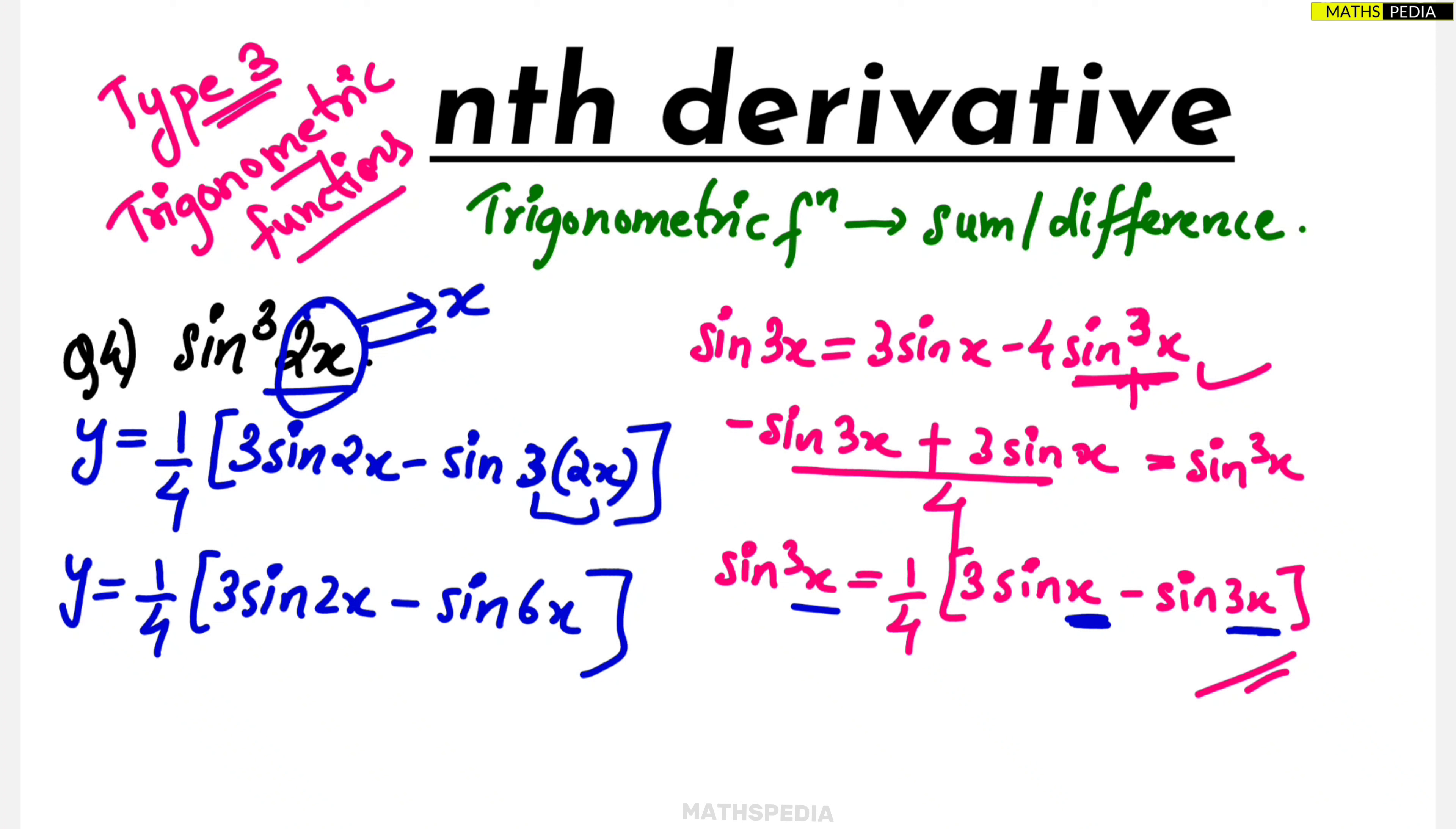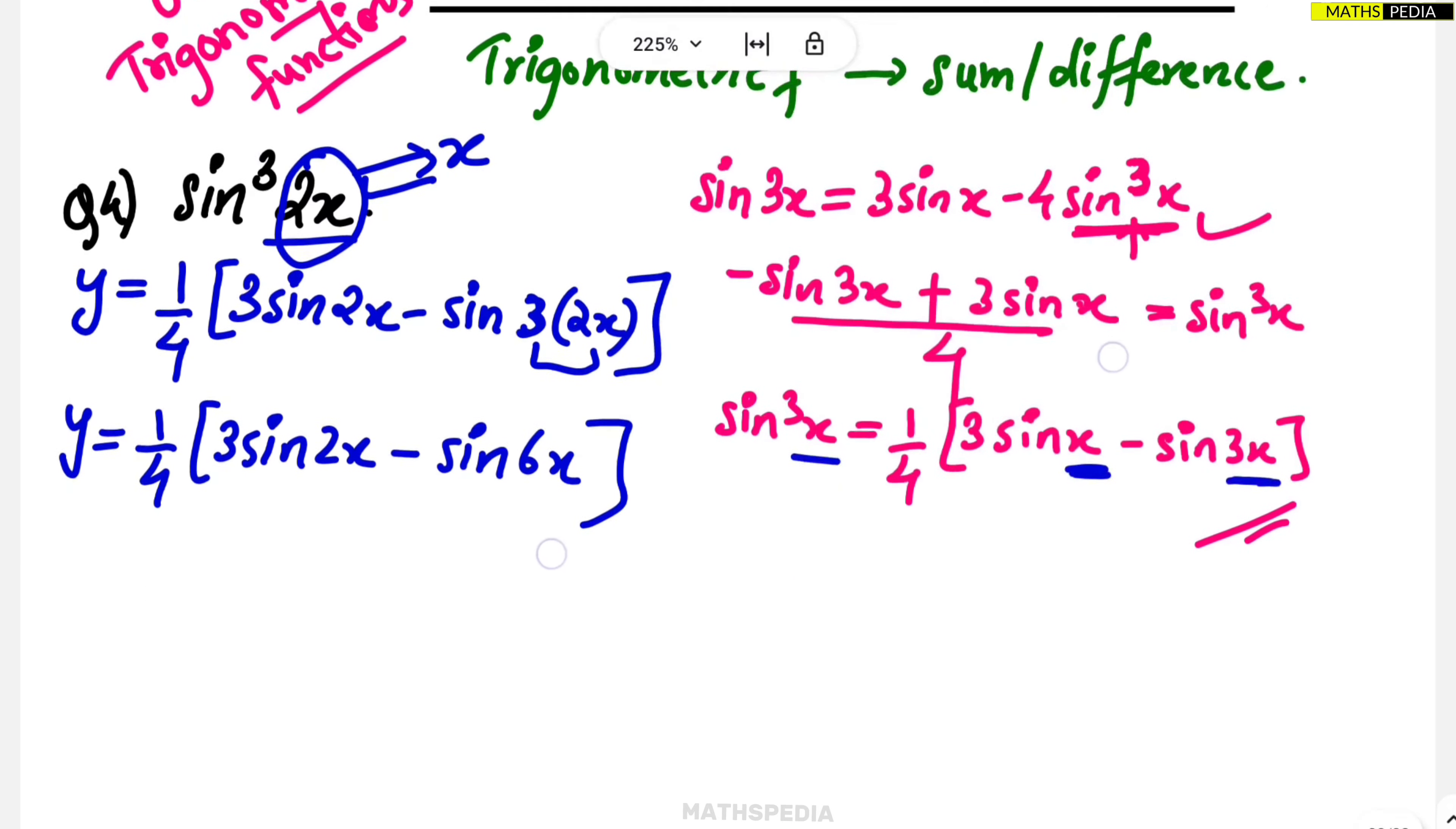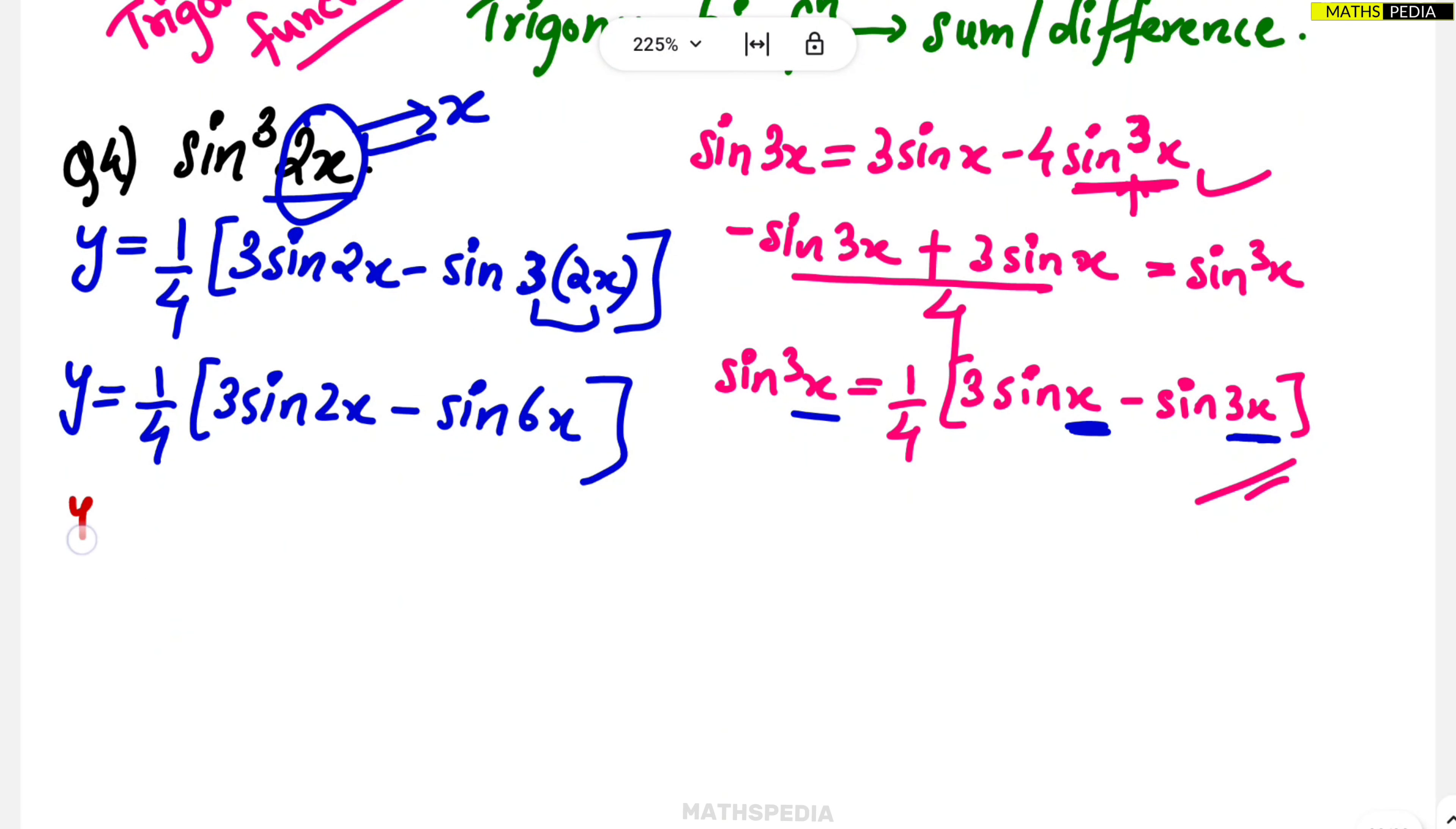We have got the values. It is in difference form, we can directly find the nth derivative. So nth derivative yn is equal to 1 by 4. Now 3 is a constant that you can take outside. 3 into nth derivative of sine 2x minus nth derivative of sine 6x.